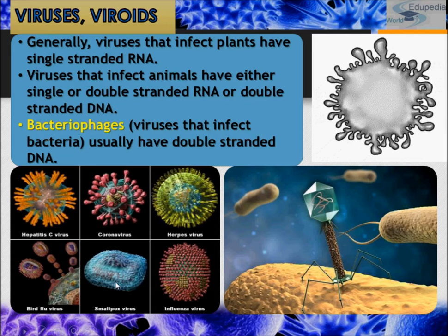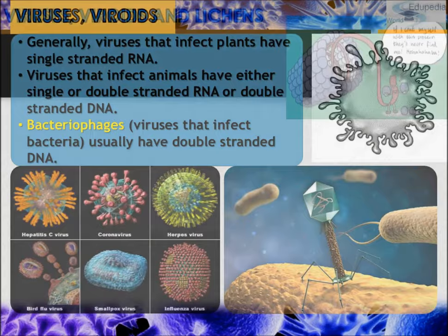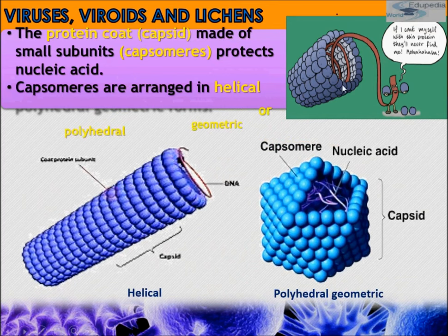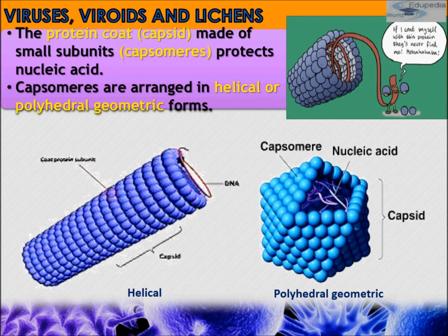The capsid is a protein coat made up of small subunits that protect the nucleic acid — DNA or RNA. These small subunits are known as capsomeres, which form the protein coat called the capsid. Capsomeres are arranged in either a helical or polyhedral geometric form, with nucleic acid contained within.